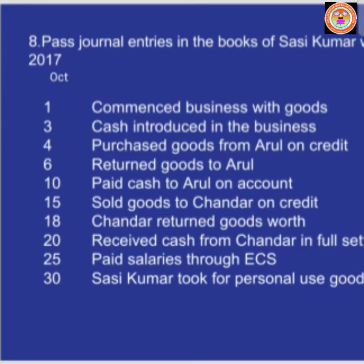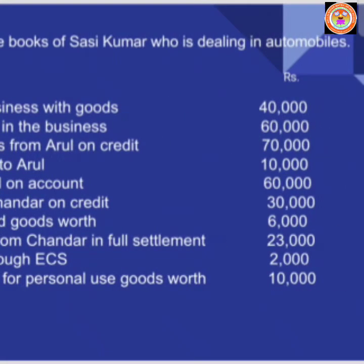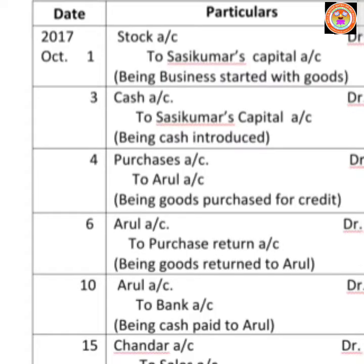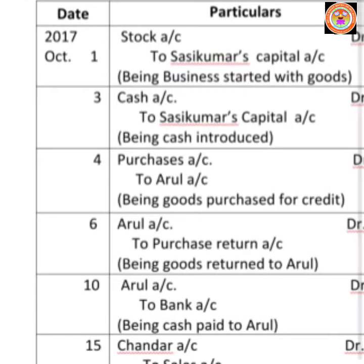Come to the first transaction: October 1, 2017 — commenced business with goods Rs.40,000. Sassi Kumar started business with goods on 1st October 2017. Under the date column, write 2017 at the top (it is common for all), then October, then date 1. Goods are otherwise known as stock — you may use the word stock or goods.